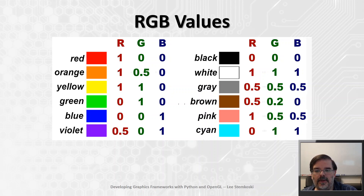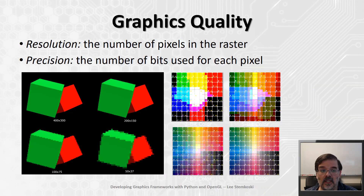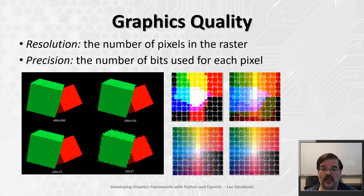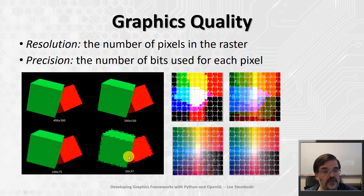The quality of an image depends on its resolution — the number of pixels in the raster — and its precision, the number of bits used for each pixel. Each bit has two possible values, 0 or 1, so the number of colors that can be expressed with n-bit precision is 2 to the n. For example, early video game consoles with 8-bit graphics were able to display 2 to the 8, or 256 different colors. A monochrome or black-and-white display could be said to have 1-bit graphics, while modern displays often feature high color or true color graphics. The figures here illustrate images rendered with different resolutions and precisions.